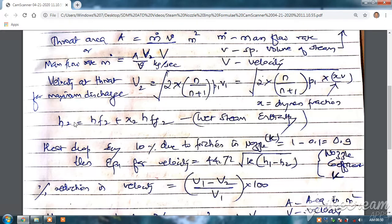So h2 is equal to enthalpy of 2 is equal to hf2 plus x2 into hfg2. This is for wet stream enthalpy.